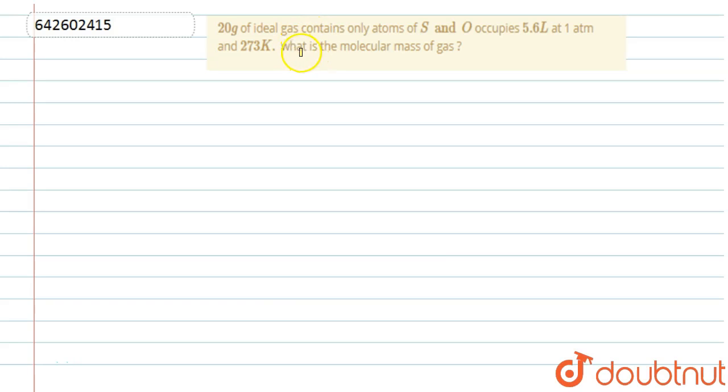Hello everyone. Let's start with this question. In this question we are given 20 grams of ideal gas containing only atoms of S and O, occupying 5.6 liters at 1 atmosphere and 273 Kelvin temperature. What is the molecular mass of the gas?